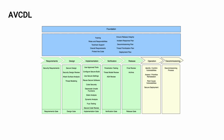The AVCDL is a framework that covers all the points from our Apollo example, as well as many others. Because of its scope, detail, and availability, we'll use the AVCDL as the basis for evaluating the maturity of our suppliers. For more details on the framework, refer to the AVCDL overview training.